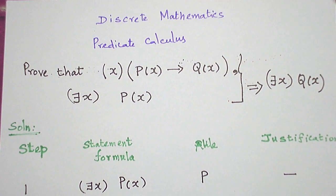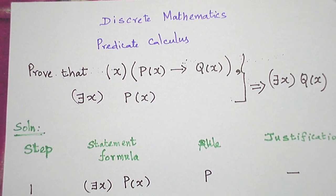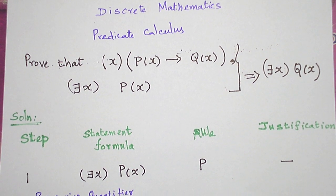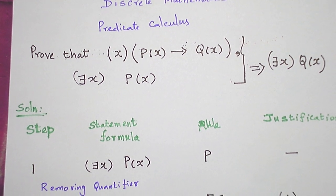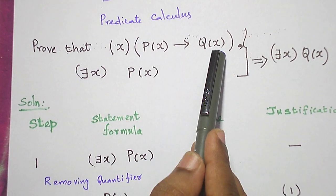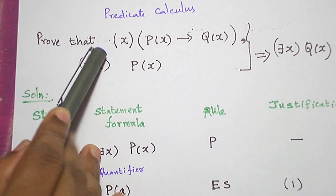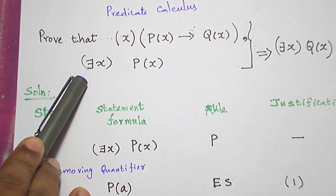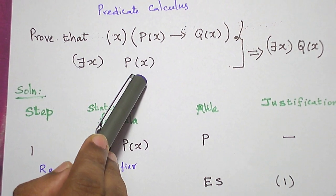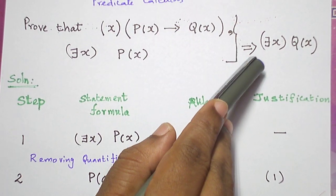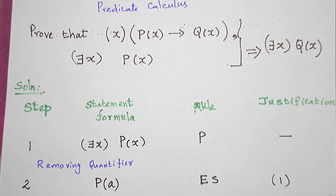Hello students, today let us see a problem in the topic predicate calculus that comes in the subject discrete mathematics. We are given two statement formulas — specifically, quantified statements: P(x) → Q(x) and P(x). One statement is quantified with the universal quantifier, the other with the existential quantifier. For all x, P(x) → Q(x), and there exists x such that P(x). When combined, we get the conclusion: there exists x such that Q(x). This is what we are supposed to prove.